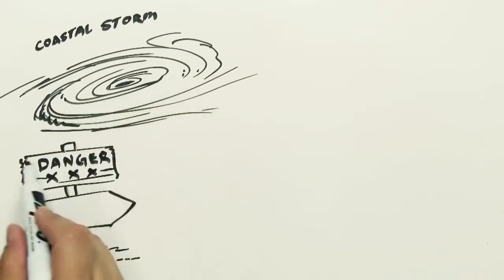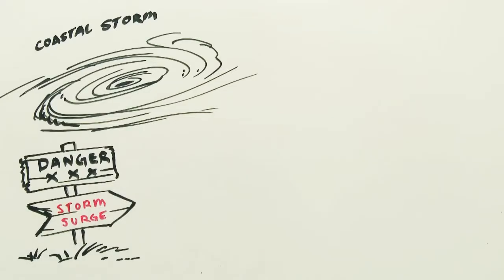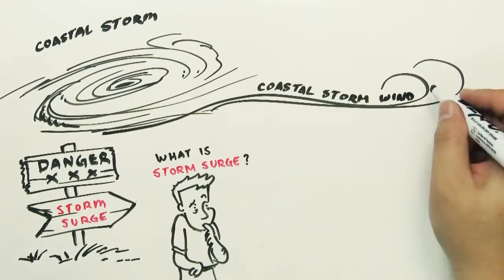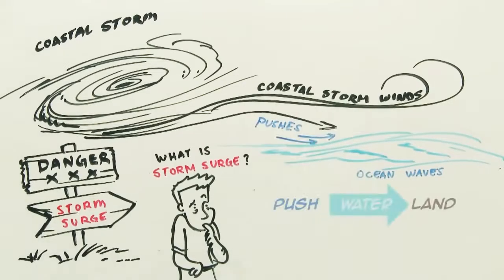One of the most dangerous parts of a hurricane is storm surge. What is storm surge you ask? Storm surge is what happens when the winds of a coastal storm push water onto land.